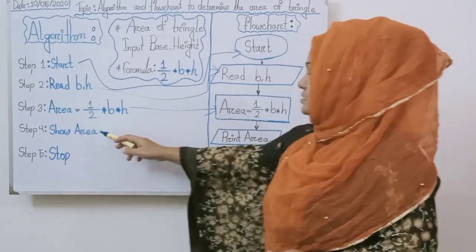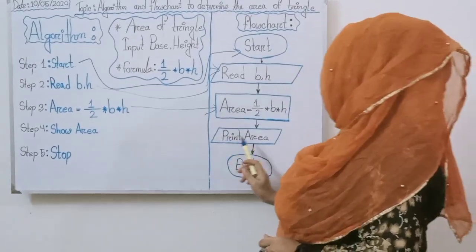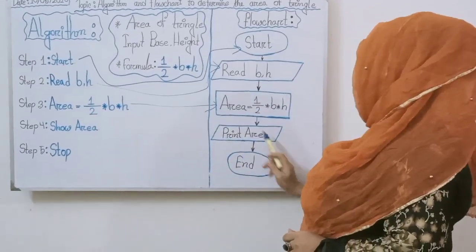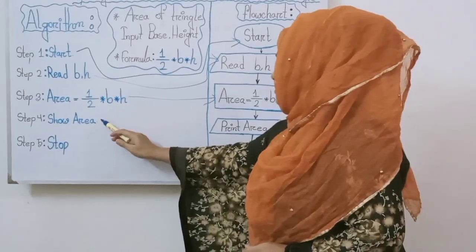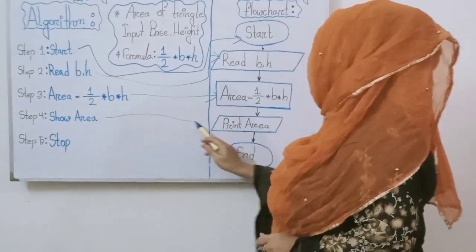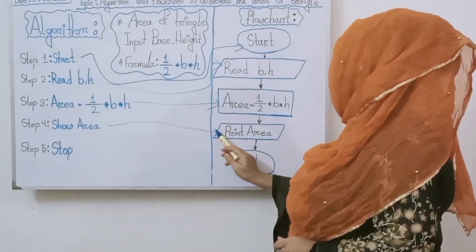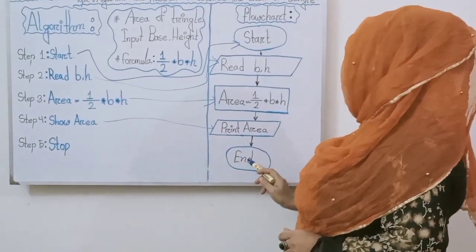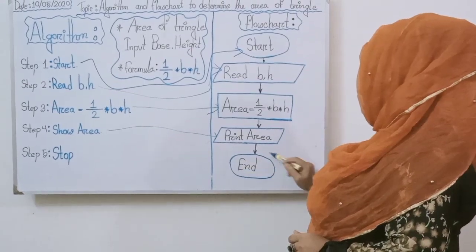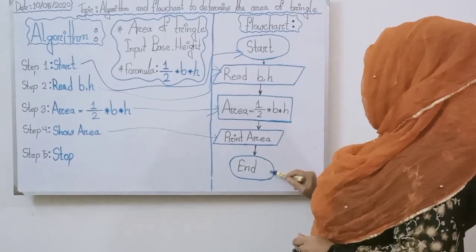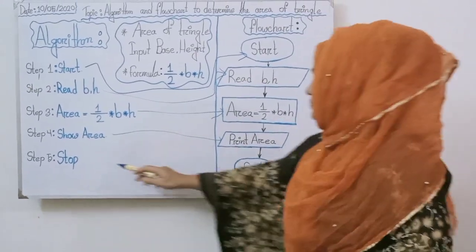Step 4: Print area — it is the output. And last, End. This is the ending symbol.